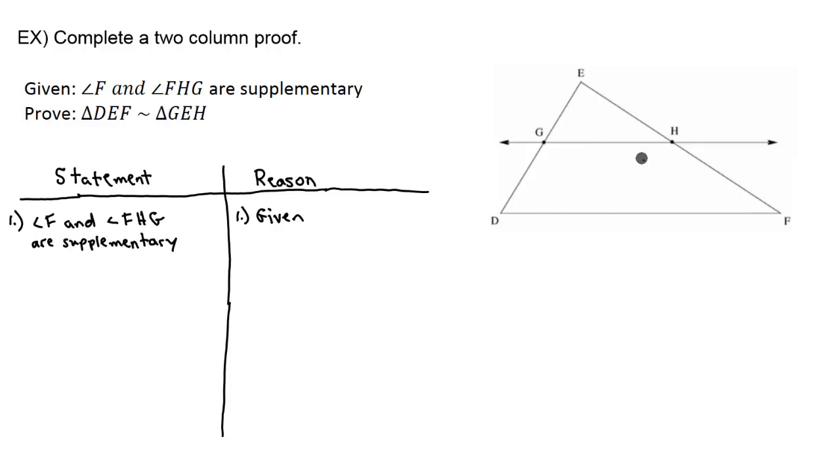Because we know that angle F, which is going to be this angle here, and FHG, which is going to be right here, because we know those are supplementary, we also know something else about this situation. And that is that this line right here, GH, is going to be parallel to this line down here, DF. Because I'm going to run this line across there. That green one is going to be parallel with this green one right here.